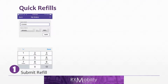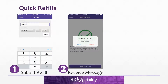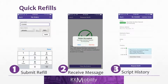If it is their first time, the patient enters the script number and date of birth and presses refill. Once submitted, it gets sent through to the pharmacy portal and through to Pk software. Pk will check if it's a valid script or not and send back an appropriate message to the patient. In this case, the order has been accepted. Pk will also synchronize with RxMobility and update the script history, which will then be available on the app for the patient.